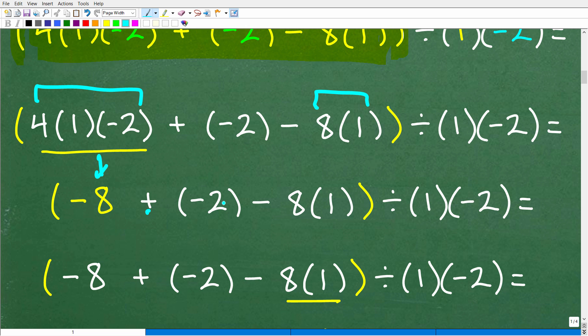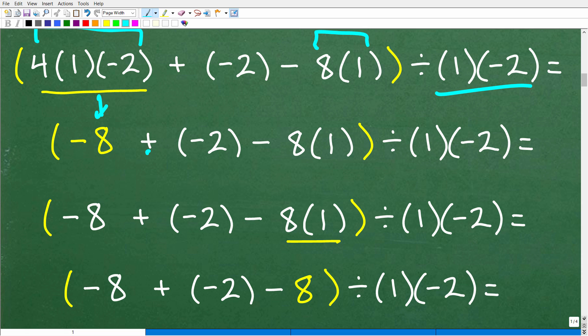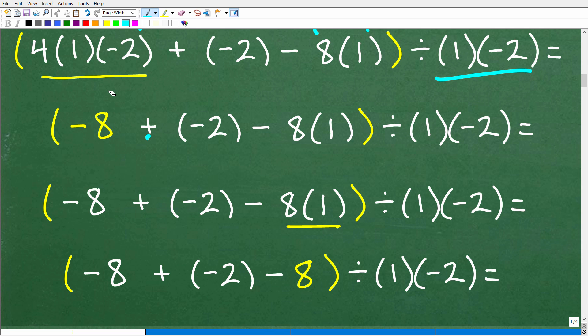Again, we want to do this problem without the aid of a calculator, plus negative 2, minus 8 times 1, which, of course, will be 8. We'll do that in just one second. Again, divided by 1, divided by negative 2, or 1 times negative 2. So we'll get to all of this one step at a time. Take it nice and easy for those of you out there that just kind of want to see all the steps.